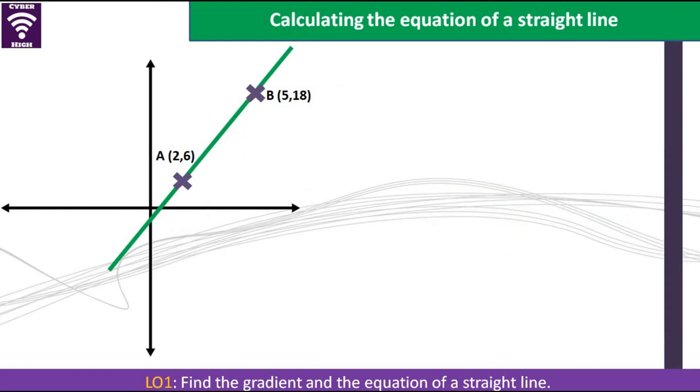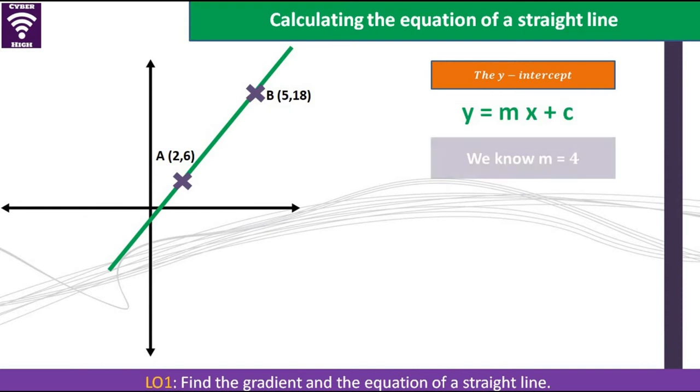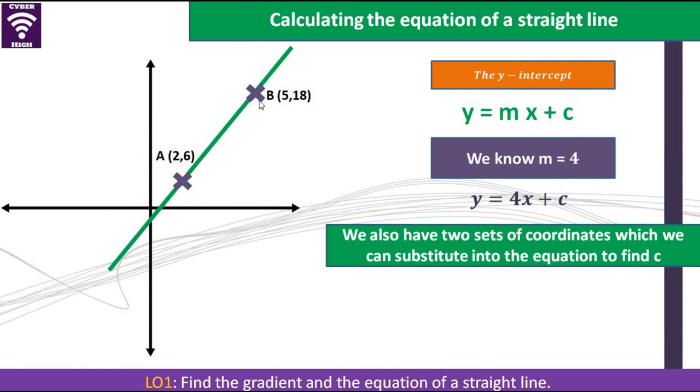Now that we know about the gradient, we need to find out what is the value of c. For us to know the value of c, we have to substitute our gradient into the equation. Our gradient, as you know, is 4. So we are now going to have y is equal to 4x plus c. Since we know that y is equal to 4x plus c, and we have been given two points of this line, it is important for us to now use one of these points, substituting it into this expression, so that we can find the value of c.